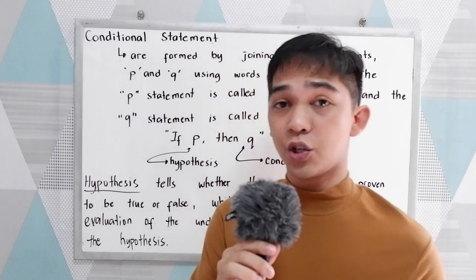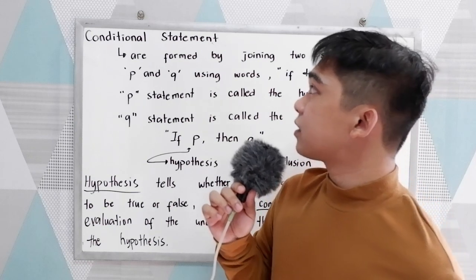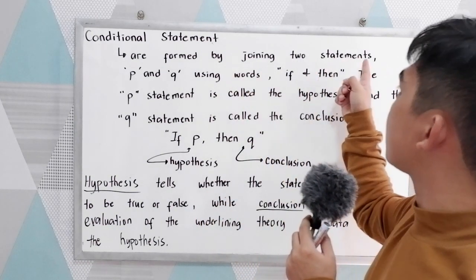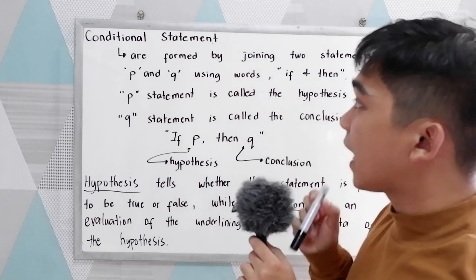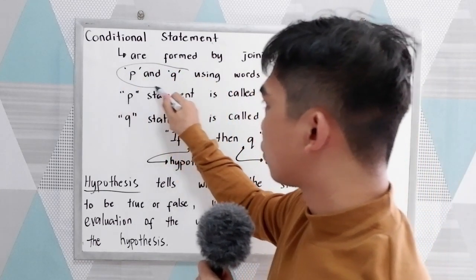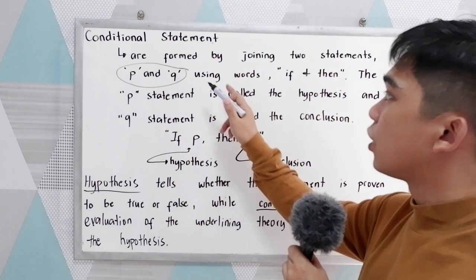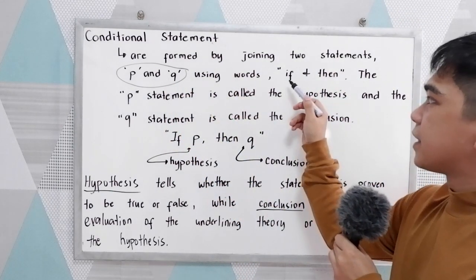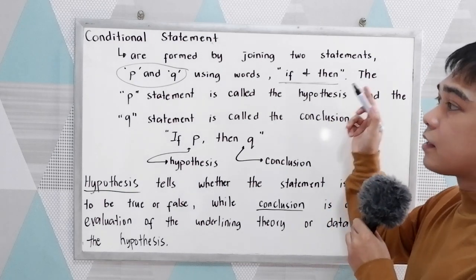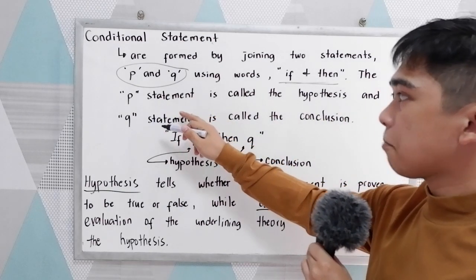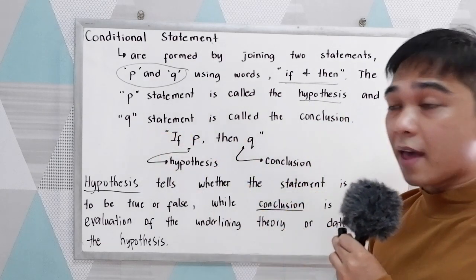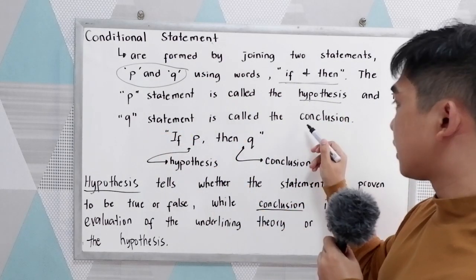By definition, a conditional statement is formed by joining two statements, P and Q. These are our two statements — P and Q — using the words 'if' and 'then.'